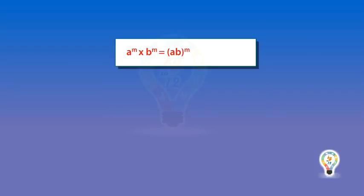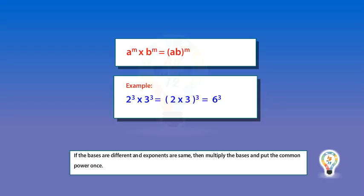Next law of exponents is in case of multiplication, if the bases are different and exponents are same, then multiply the bases and put the common power once.